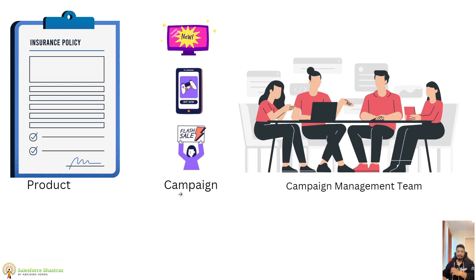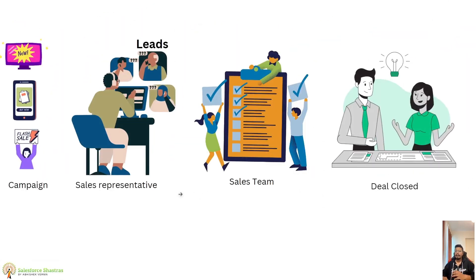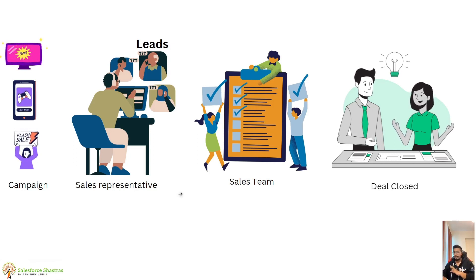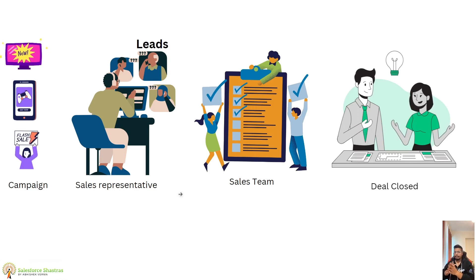To run these campaigns and events, they have a dedicated campaign management team. Customers will see these campaigns and call in expressing interest in purchasing the policy. That person who calls the customer sales representative becomes a lead. All these leads go to the sales team. The sales team analyzes each lead based on their rating, the customer's interest, and interaction with the sales representative to determine whether the lead is qualified and whether the person is really capable and interested in buying the product.